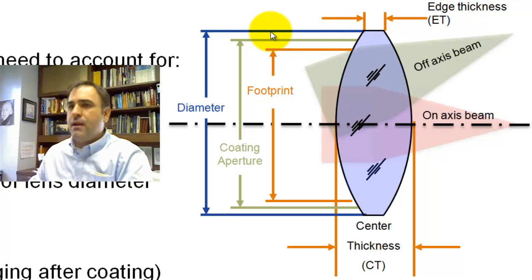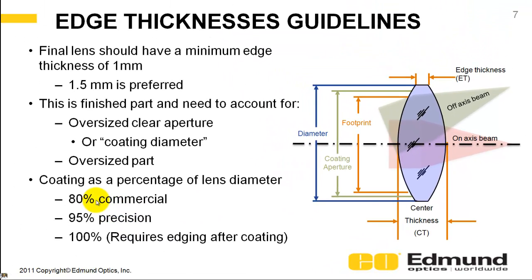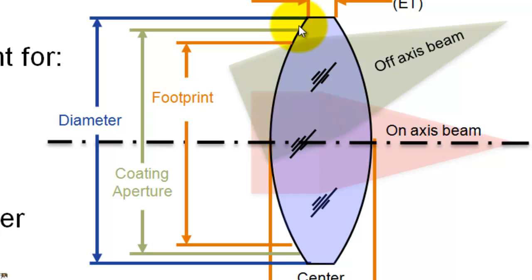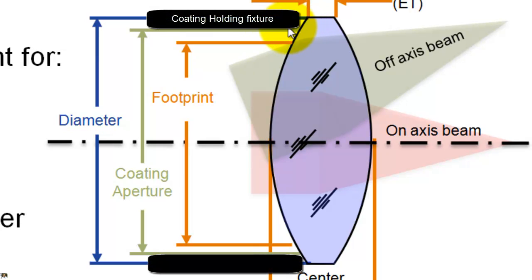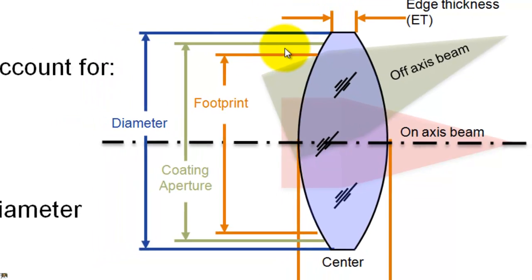And then you want to oversize it a little bit for the diameter. Now why would you do that? You would want your coating aperture to be some percentage of the diameter. And for commercial, you want roughly 80%. Precision is more like 95%. And the risk you run there is when you put this in the coating chamber, the difference between the coating aperture and your diameter is going to be held in place by a piece of metal.